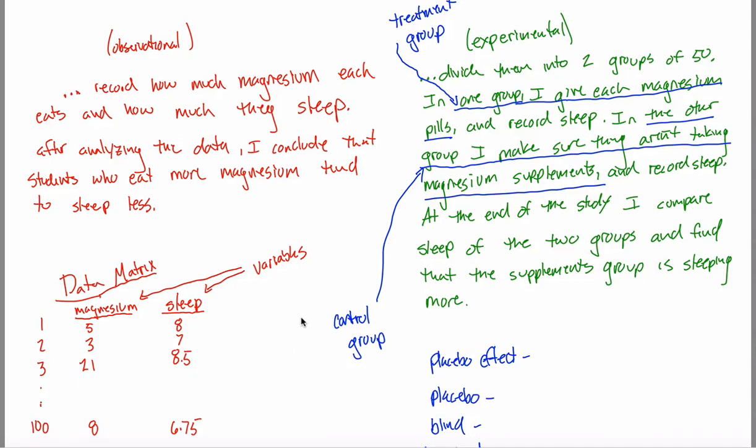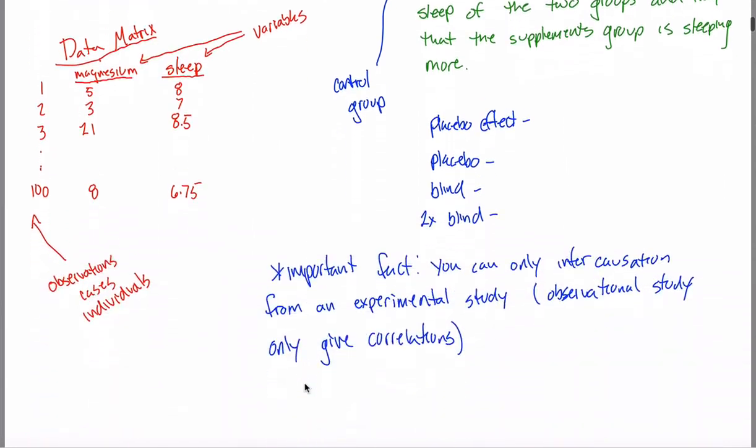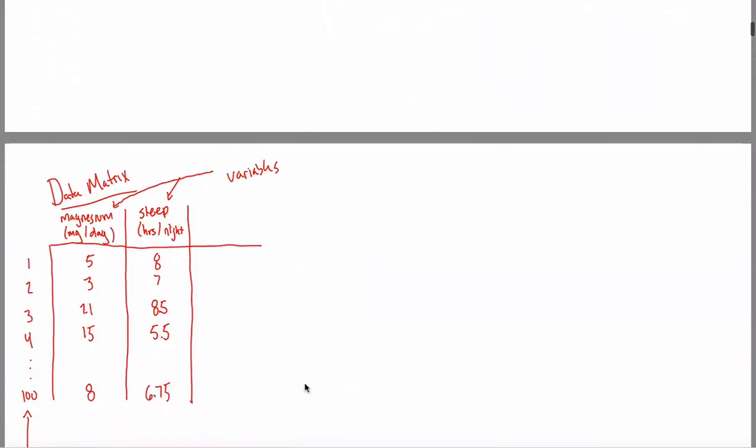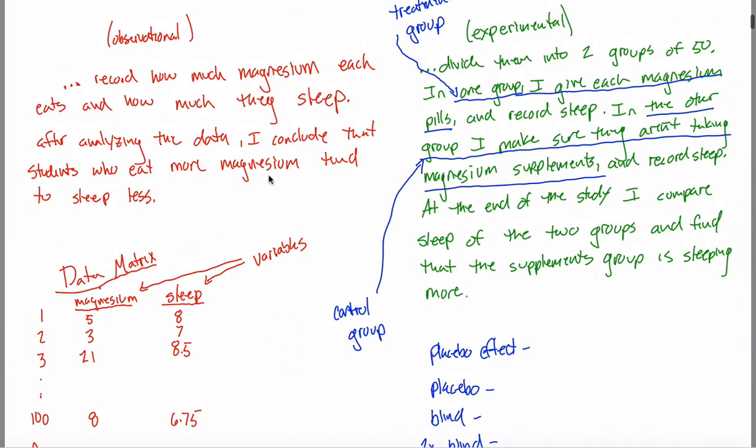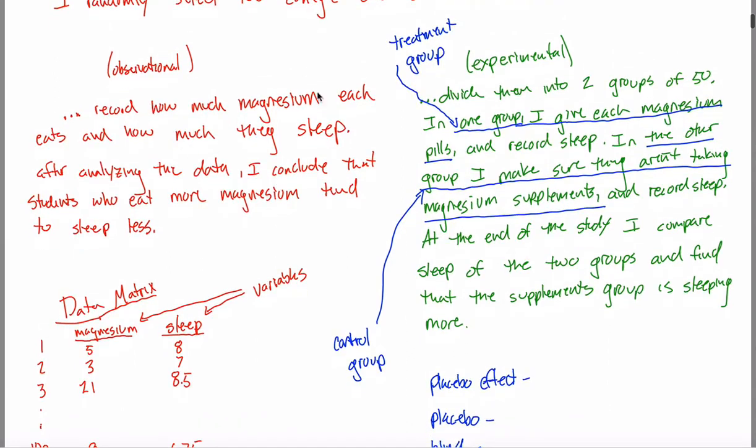Alright, here is the last of these videos on vocabulary, the first section of our Intro to Statistics class. When I left you last, we had talked about the difference between observational studies and experimental studies, and in each type we learned some vocabulary words.